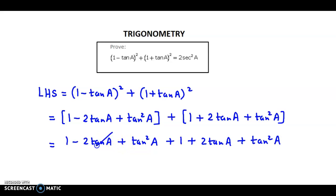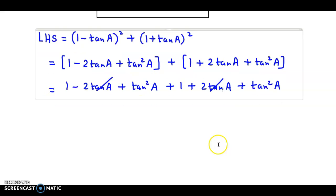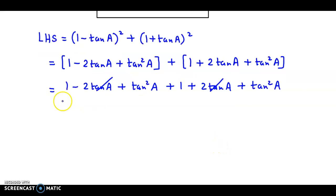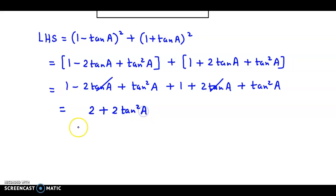Now, minus 2 tan a cancels with positive 2 tan a. So we have 1 plus 1, that is equal to 2, plus tan square a plus tan square a, which is 2 tan square a. Now we can take 2 as the common factor, giving us 2 times 1 plus tan square a in brackets.